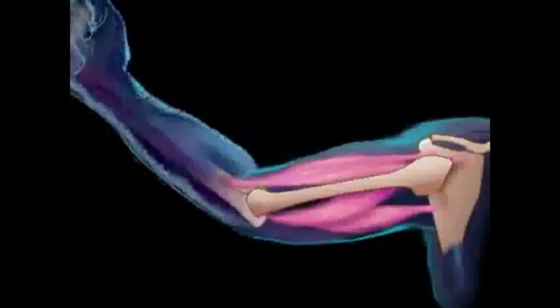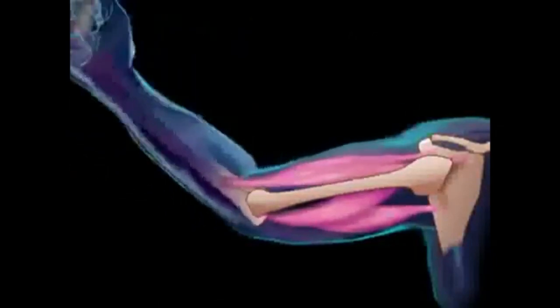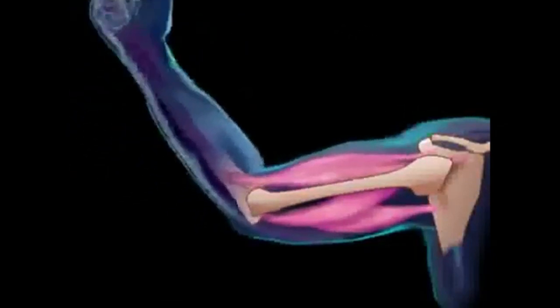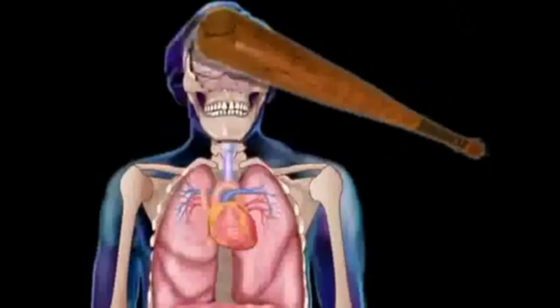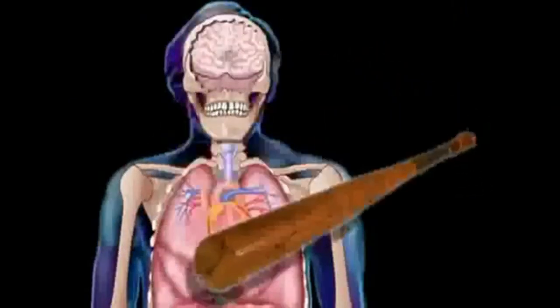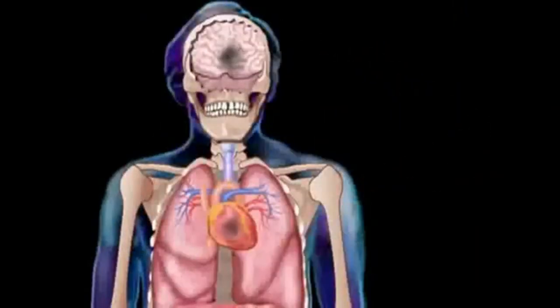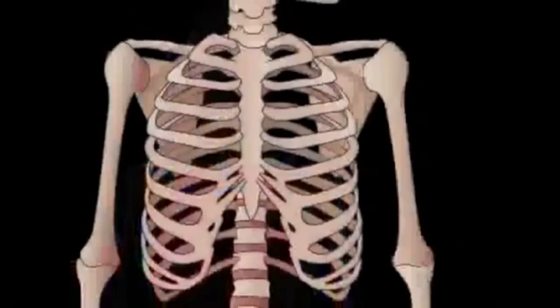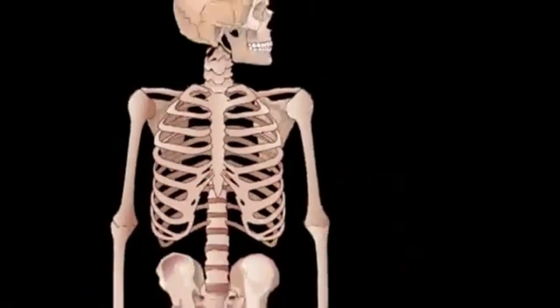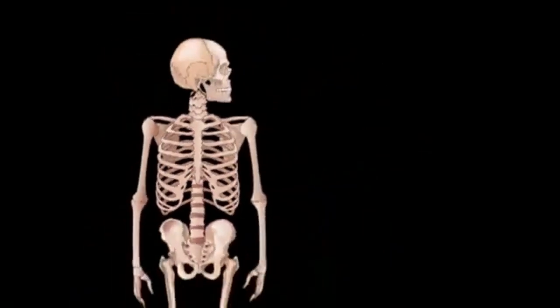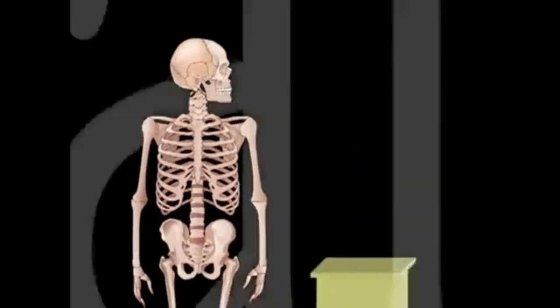Our muscles, pulling this way or that way on our bones, produce movement. And without the protection of our skeleton, even a simple bump on the head or chest could injure vital internal organs. Pound for pound, the bones of the skeletal system are stronger than steel.